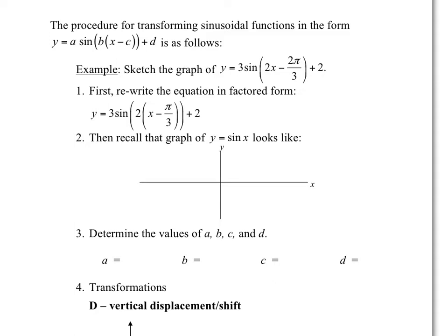Just a quick review of what the graph of sine looks like. I'm going to sketch the graph of sine between 0 and 2π. We start at 0, it goes up and goes down. This would be 2π. It crosses the central axis at π. There would be two values here: π over 2, and 3π over 2. The maximum is 1 and the minimum is negative 1.